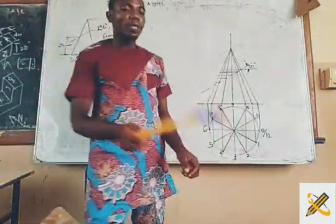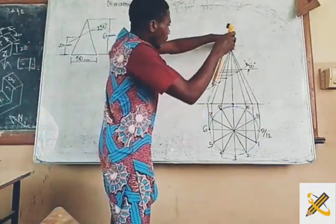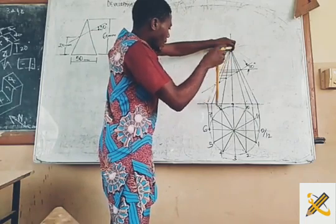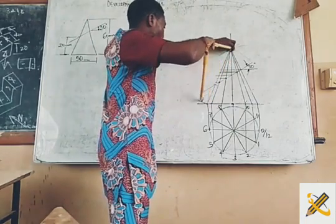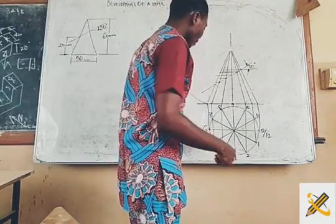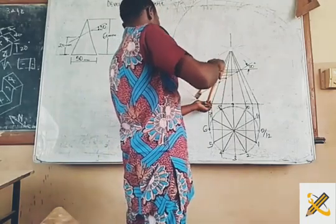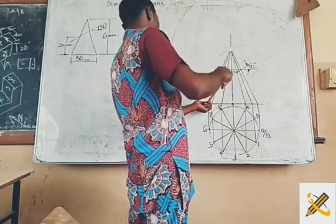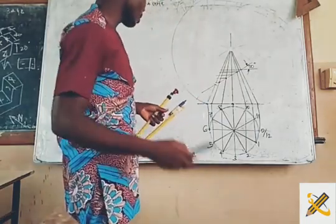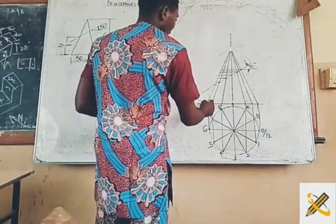Now I'm going to pick my compass. Picking the total height distance of the cone, I'm going to transfer it here. I'm picking one of the arc measurements and placing the compass starting from here — this point will serve as my zero reference.